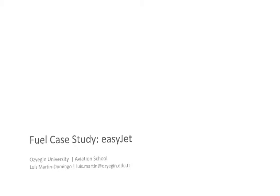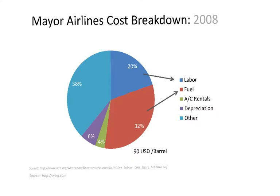Taking into account that fuel is one of the major airline costs, this video looks at the fuel case study of EasyJet. The total cost of fuel depends very much on the price of oil. In 2008, oil was at 90 US dollars per barrel, and the total cost of fuel for airlines on average was around 32%, being the largest single cost.